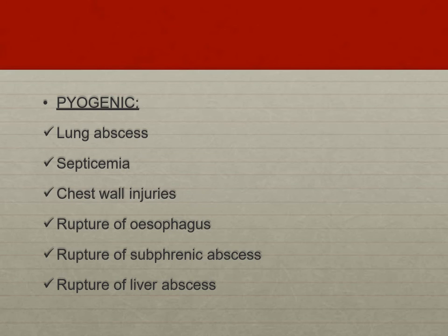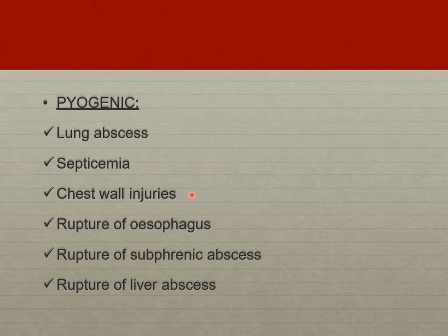Pyogenic pleural effusion can result from lung abscesses, septicemia, penetrating chest wall injuries, rupture of the esophagus leading to contamination of the pleural cavity with food contents, rupture of a subphrenic abscess extending into the pleural cavity, or rupture of a liver abscess itself. Chylothorax can result from trauma to the thoracic duct causing local leakage, or from tumors such as mediastinal lymphoma, tuberculosis, or lymphatic obstruction leading to backflow and leakage.